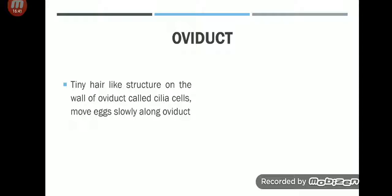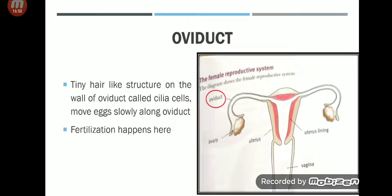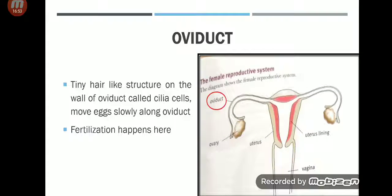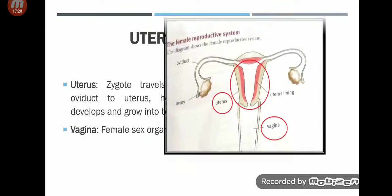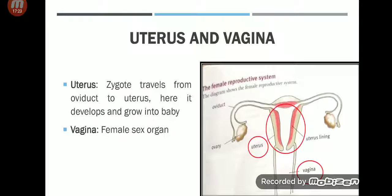The cilia cells move eggs slowly along the oviduct, and fertilization happens in the oviduct. Then we have the uterus and vagina. The zygote travels from the oviduct to the uterus, because fertilization happens in the oviduct. The zygote is formed and travels to the uterus, where the baby will be developed. The vagina is the female sex organ.